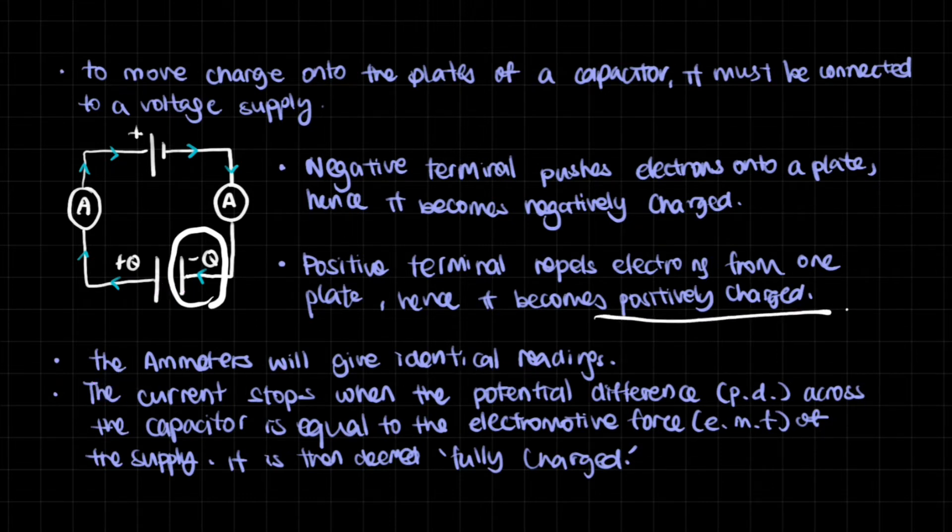Now, the ammeters will give identical readings, meaning that the current is the same on both sides of the circuit. And the current stops when the potential difference across the capacitor is equal to the electromotive force of the supply. It is then deemed to be fully charged.